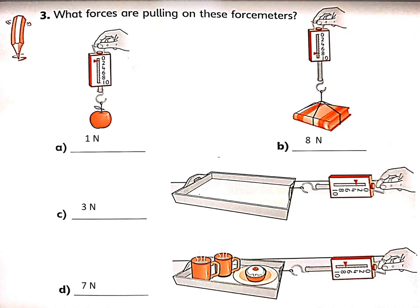That is the weight — how much it pulls the spring down toward the ground. Then I add 2 cups, 1 cupcake, and a plate, so it will be heavier. The reading is now 7 Newton. The empty container was 3 Newton and the heavier one with cups, plates, and cupcakes is 7 Newton. The heavier the object, the more it pulls down.